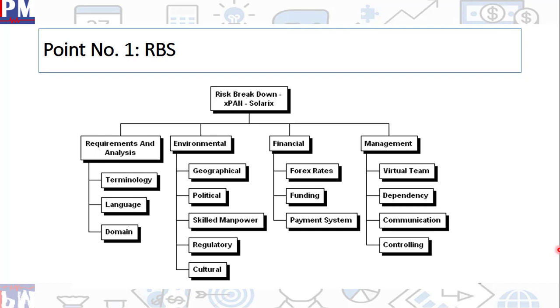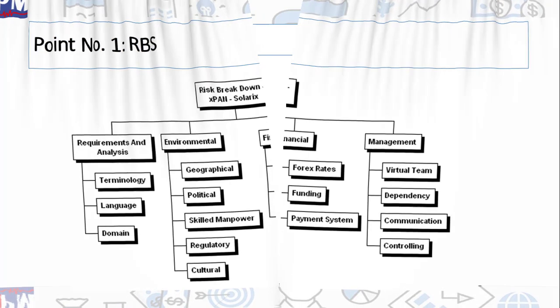RBS is an input to the process called identify risk. Very similar to the way the WBS is taken in identification of all possible activities. In defined activities, you have the WBS, which tells us what are the work packages, and then those work packages are broken down into activities. The same way in risk management, we have the RBS, which tells us the major categories of risk. And later on in identify risk, we break them down into individual risks.